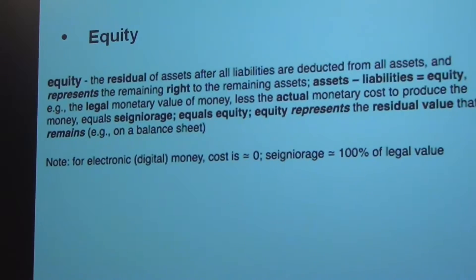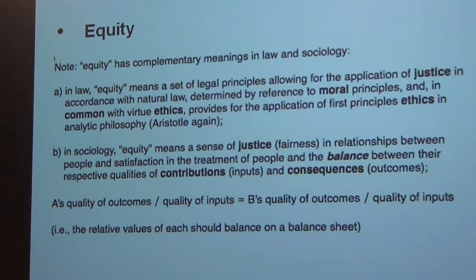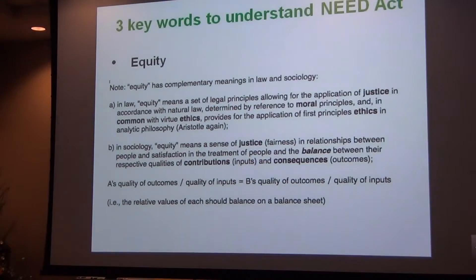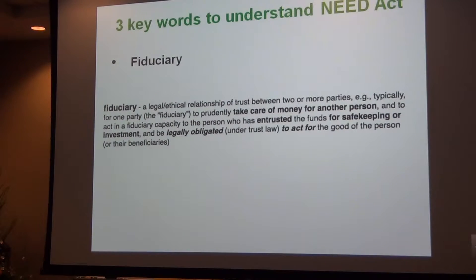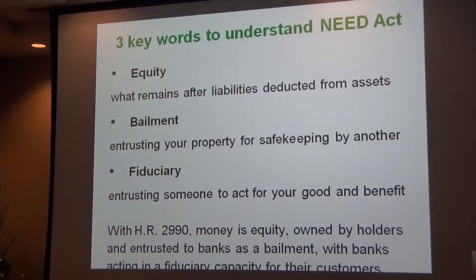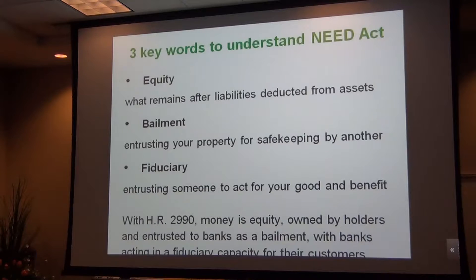We'll make this presentation available so you can look at what equity means — it has nice corollary meanings in legal and social realms as well. In summary: equity is what remains after liabilities are deducted from assets; bailment is entrusting your property for safekeeping by another; and fiduciary is entrusting someone to act for your good and benefit. The NEED Act makes money equity owned by the holders and entrusted to banks as bailment, and banks act in a fiduciary capacity for their customers.